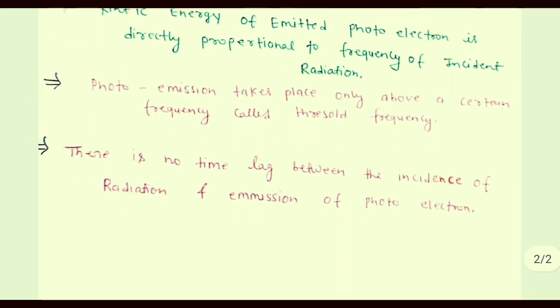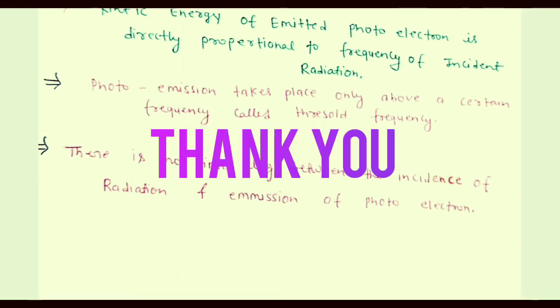Photoemission takes place only above a certain frequency called threshold frequency. There is no time lag between the incidence of radiation and emission of photoelectron. It means that as the photon falls on the metal surface, suddenly photoemission takes place. There is no difference of time between the photoemission and the falling of photons on the surface of metal.